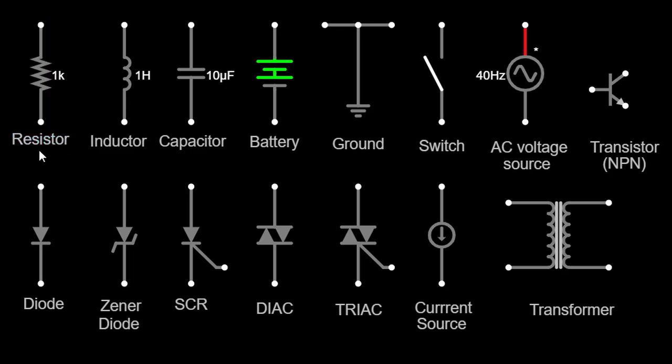The first component we'll discuss is the resistor. It is one of the most fundamental elements in electronic circuits. Resistor symbols are represented by a zig-zag line. Resistors are used to limit or control the flow of electric current in a circuit. They come in different resistance values, measured in ohms.